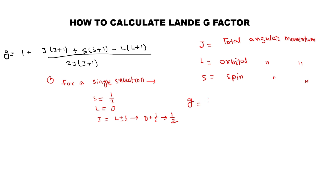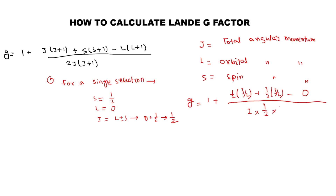Now let's put these values into the equation. g is equal to 1 plus: j is one-half, j+1 is 3/2; s is one-half, s+1 is 3/2; l is 0. After calculating, we get 1 plus 1, which equals 2. Therefore, for a single s electron, the Landé g-factor is equal to 2.